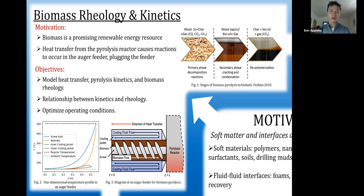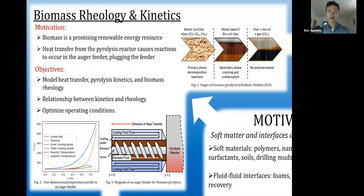In figure three, biomass enters at Z equals zero into the auger feeder and the rotating screw moves the biomass to Z equals L, which is the end of the feeder that is connected to the pyrolysis reactor. Outside of the auger there is also a cooling loop parallel to the biomass that flows parallel to the biomass to prevent heating that would cause a reaction prematurely.